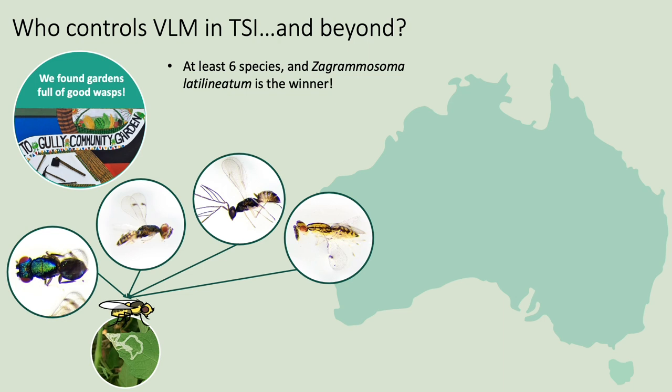Within the Torres Strait and NPA, we found that the vegetable leaf miner is being controlled by at least six different parasitoid wasps. One of these, called Hemitarsinus — shown on the right with the amazing antler-like antennae — is already well known as one of the most important sources of biocontrol overseas. We also found a poorly studied Australian species called Zagrammosoma, the beautiful striped wasp on the right, which was the strongest player in the Torres Strait and NPA, doing the majority of control on each of our visits.